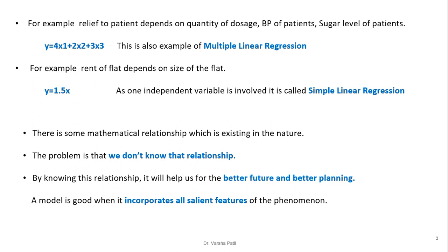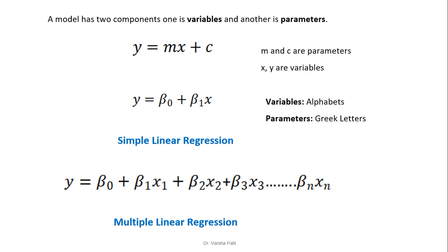There is some mathematical relationship which exists in nature. The problem is that we don't know that relationship. By knowing this relationship, it will help us for better future planning. A model is good when it incorporates all the salient features of the phenomenon. A model has two components: variables and parameters.